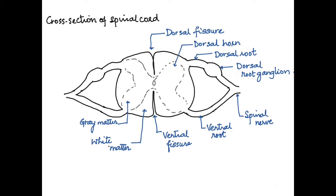On the dorsal side, the neurons enter the spinal cord, carrying information from different parts of the body to the spinal cord. These are the sensory neurons, and their cytons are located in the dorsal root ganglia. On the ventral side, we have the motor neurons that leave the spinal cord to carry out the response.